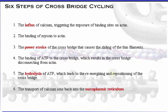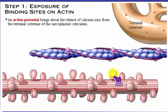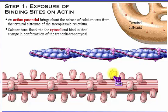The first step is exposing actin's binding sites. When a muscle cell is stimulated, the action potential brings about the release of calcium ions from the terminal cisternae of the sarcoplasmic reticulum. The calcium ions flood into the cytosol and bind to the troponin, causing a change in conformation of the troponin-tropomyosin complex. This conformational change exposes the binding sites on actin. Click the cisternae to start the process.